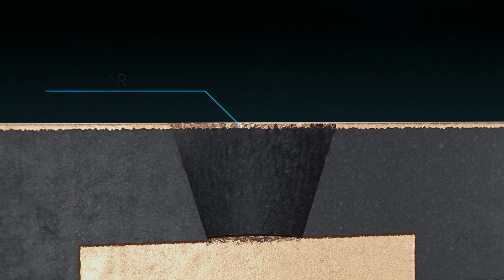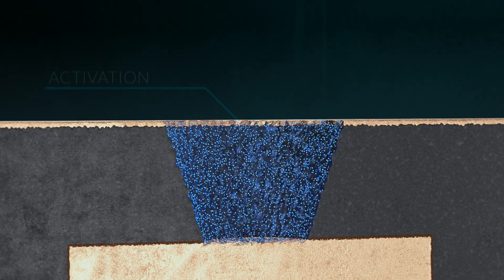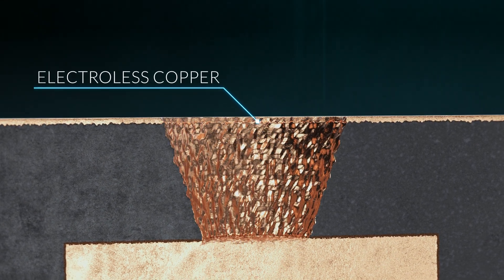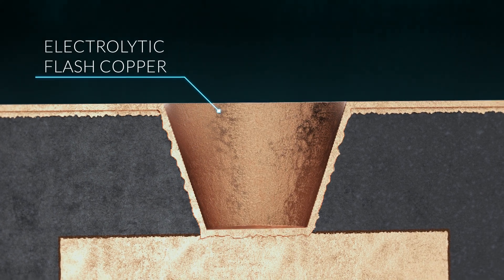The de-smear process to remove smear from the inside of the microvia. The palladium activation prior to metallization. Electroless copper metallization. Electrolytic flash copper plating to reinforce the previous metallization layer.